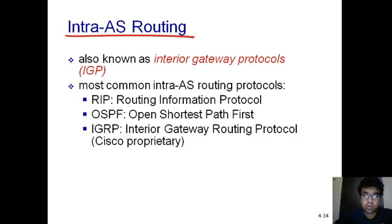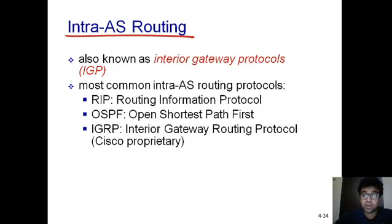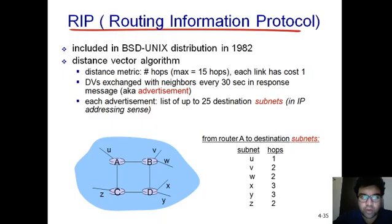Some of the intra-domain routing protocols used in the internet include RIP and OSPF. RIP stands for Routing Information Protocol, which uses the distance vector algorithm. OSPF stands for Open Shortest Path First, which uses the link state algorithm. Last but not least, IGRP — Interior Gateway Routing Protocol — is a Cisco property used worldwide.